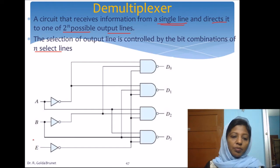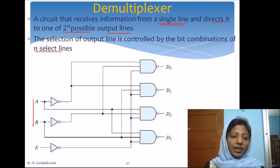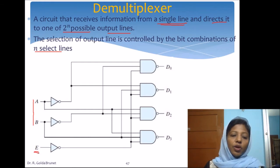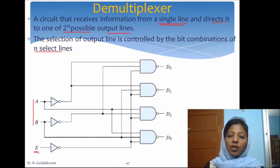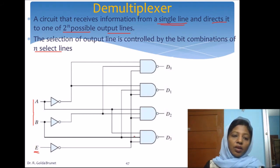Here A and B will act as the select lines, and E is the information that we want to pass on to any one of the lines D0 to D3.